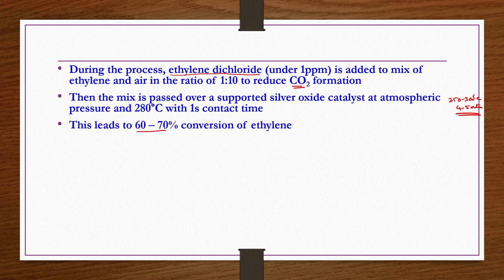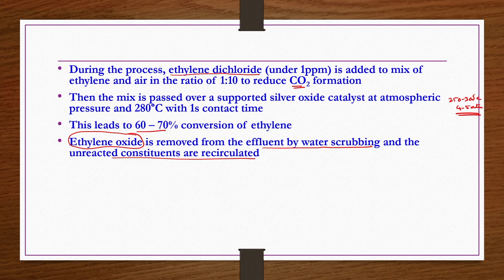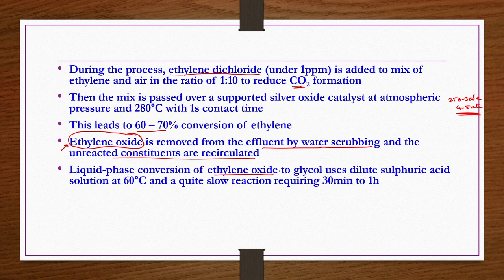Ethylene oxide is removed from the effluent by water scrubbing, and unreacted constituents are separated and recirculated to the reactor. Once purified ethylene oxide is obtained — after removing water vapor, unreacted ethylene, oxygen, light ends, and heavy ends — liquid phase conversion to glycol takes place using water. This requires dilute sulfuric acid solution as catalyst at 60°C, and reaction time of 30 minutes to 1 hour in batch or CSTR reactors.